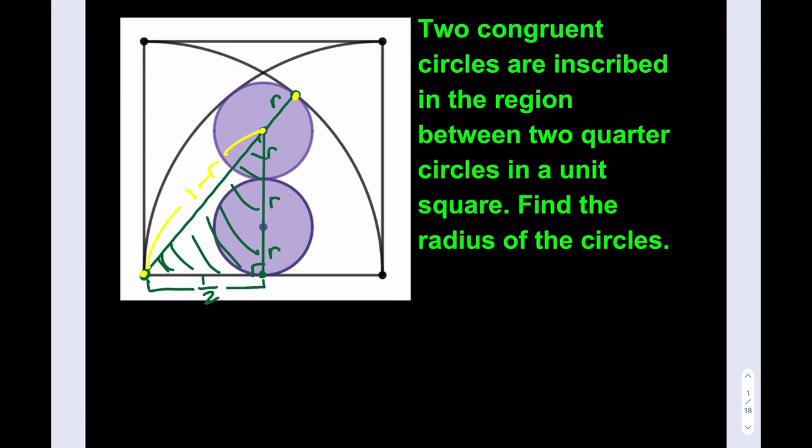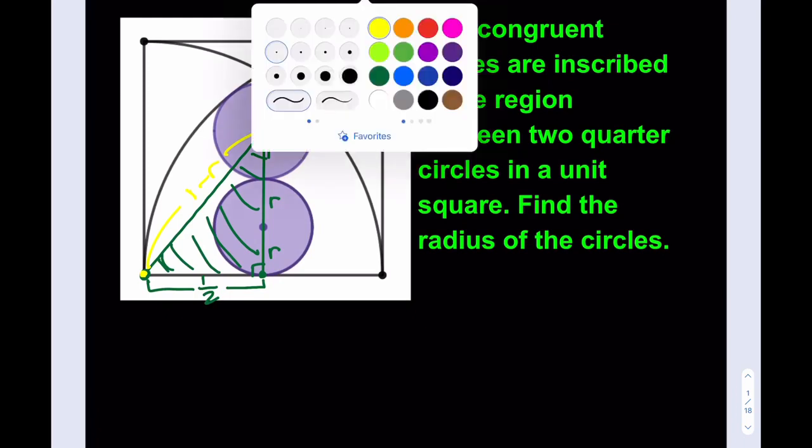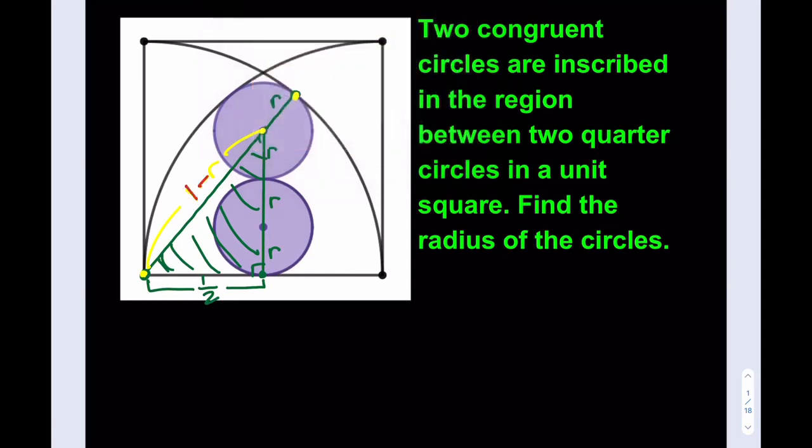So now, what can I do with this information? I can do lots of things. Let me go ahead and make this a little darker so you can see. So this distance is going to be 1 minus r, which is the hypotenuse. So now I can go ahead and write the Pythagorean theorem. Let's go ahead and do that.